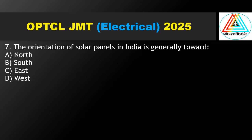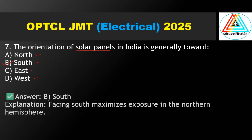Question No. 7: The orientation of solar panels in India is generally toward — north, south, east, or west? The correct answer is south. Facing south maximizes exposure in the northern hemisphere.